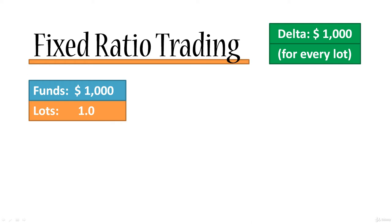Now let's focus on the left side of the screen. We've got funds which is $1,000 — that means currently we've got $1,000 on our account — and lots, which is the initial transactional volume we've set for our trading. We're saying that right now we have $1,000 on our account and we choose to trade with one lot. We'll talk about how to determine this initial lot in another section of this course, which covers the Kelly criterion. But for now, through experience, calculations, or gut feel, we decided that since we have $1,000 on our account, we're going to be trading with one lot.